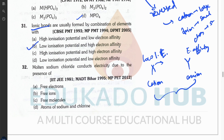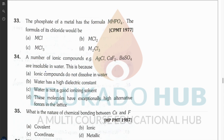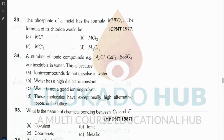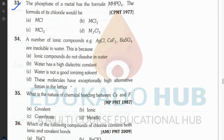Question thirty-two (asked in IIT JEE 1981): molten sodium chloride conducts electricity due to the presence of free ions. You know this already. Question thirty-three: the phosphate of a metal has a given formula — please find the chloride formula yourself using the same approach we've practiced.